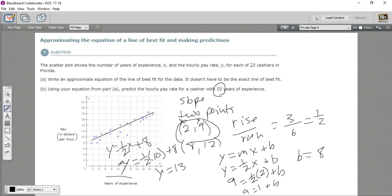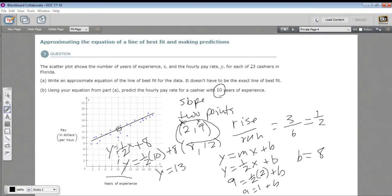And if we look at this 10 years of experience and go up to our line, there we are at 13. So it all checks out. So that is how to draw a line of best fit for a scatter plot, make an equation from the line, and then use that equation to predict some values. Thank you.